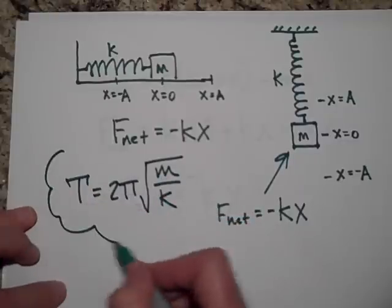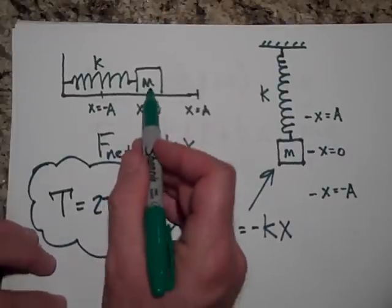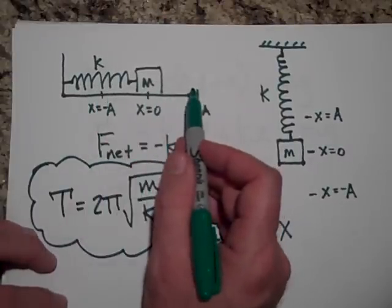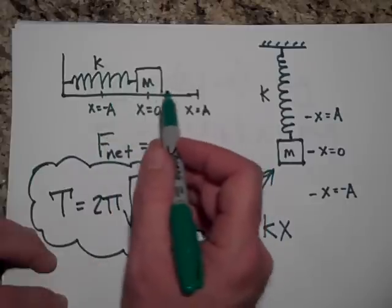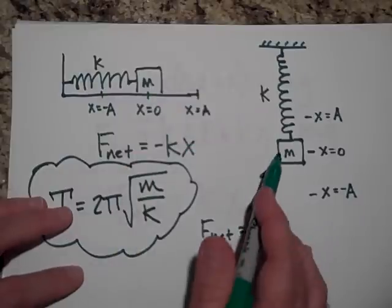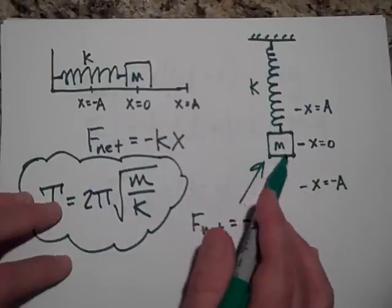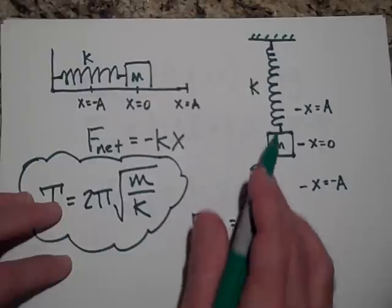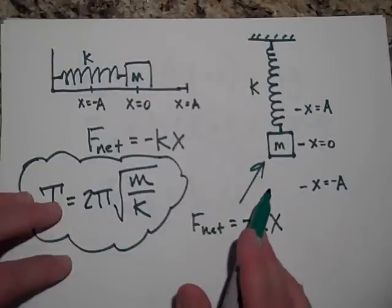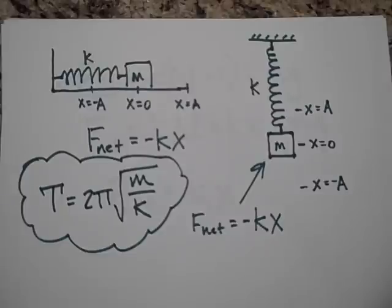The only thing that's not the same for these two systems is energy. Here the energy is oscillating between elastic potential and kinetic. This one, you have not only elastic stored in the spring and kinetic because it's moving, but it's also losing and gaining height. So energies are different, but everything else is the same. That's what I needed to tell you about a mass that hangs on a spring from the ceiling.